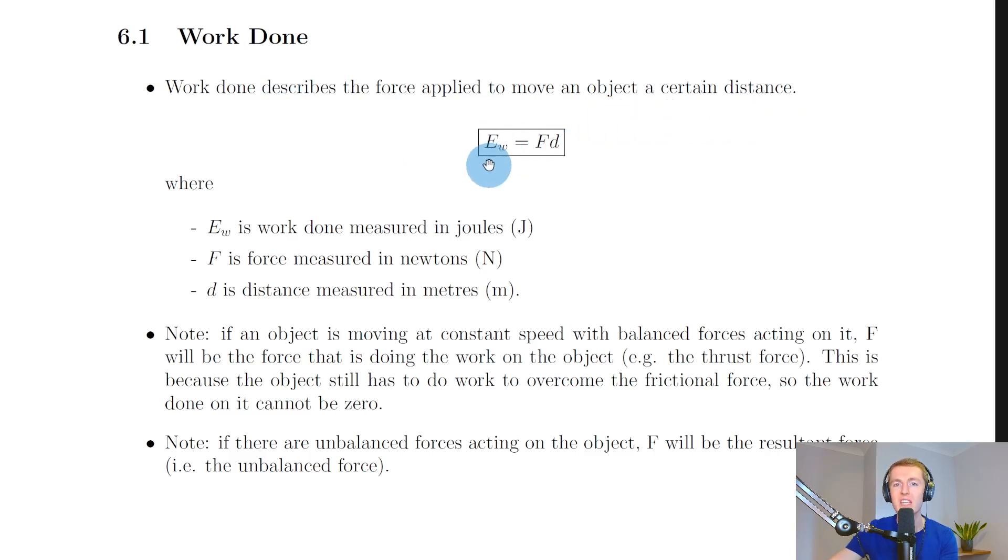The equation is Ew for work done equals F times d, where Ew is the work done measured in joules, F is the force measured in newtons, and d is the distance measured in meters. You get the equation in this form on the relationship sheet in the exam.